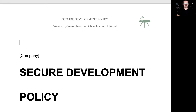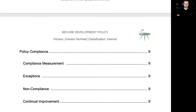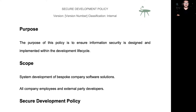The Secure Development Policy looks at information security in software development. The purpose of the policy is to ensure information security is designed and implemented within the development lifecycle. A great principle is security by design and default, so getting these things right early on and throughout the lifecycle are going to reap significant rewards and benefits, and this policy will address that particular point.